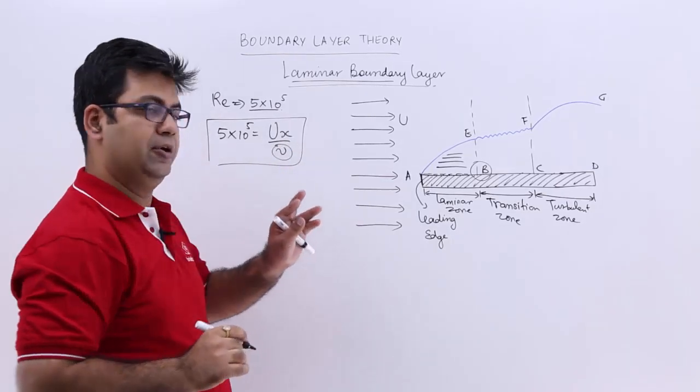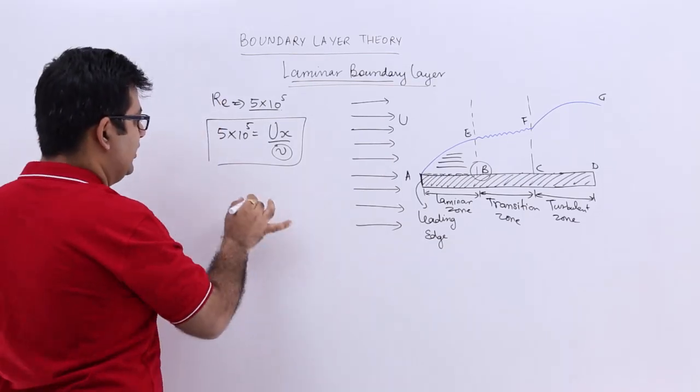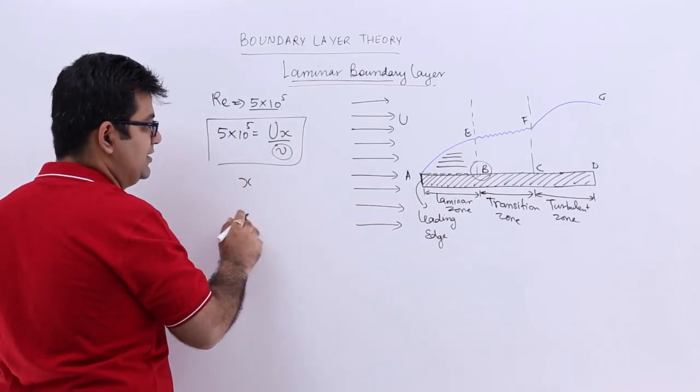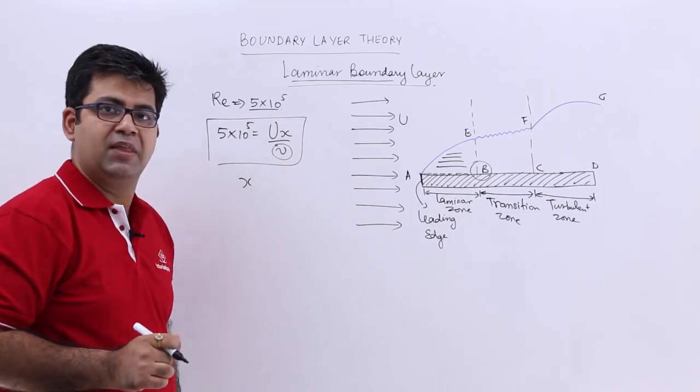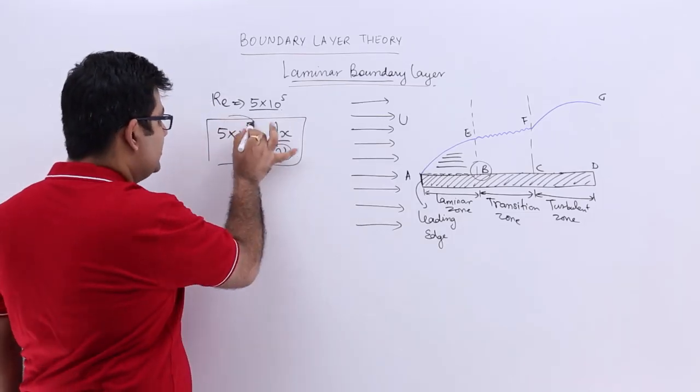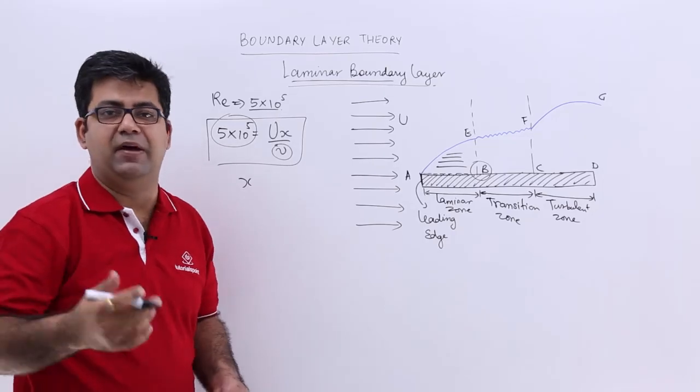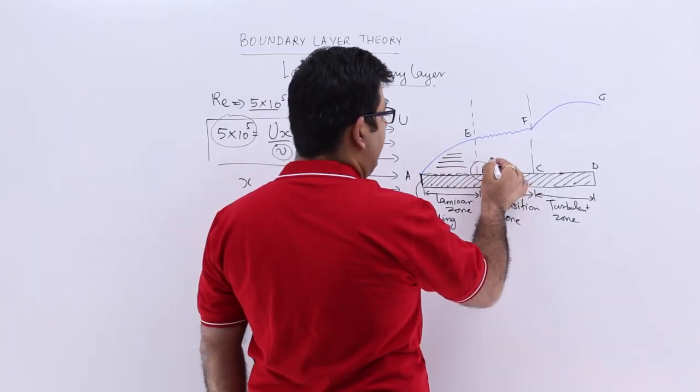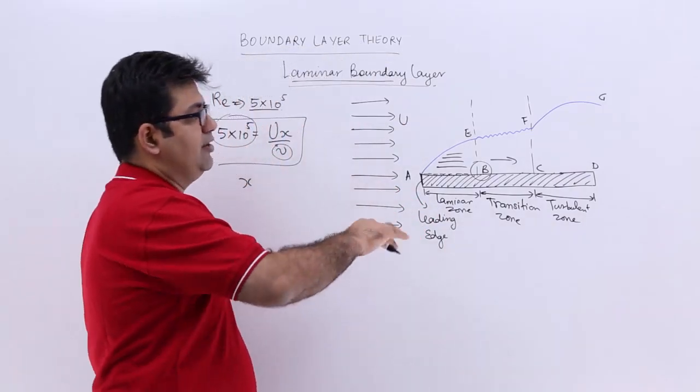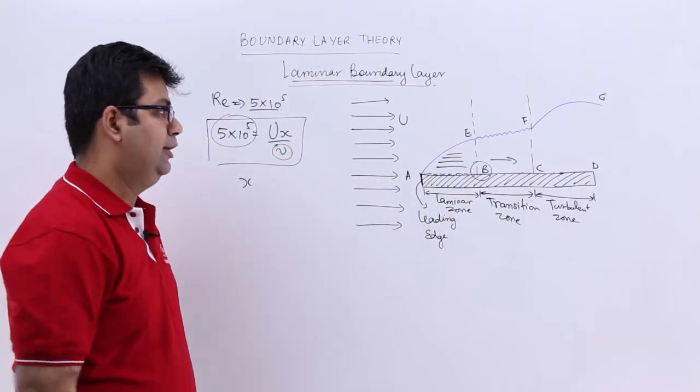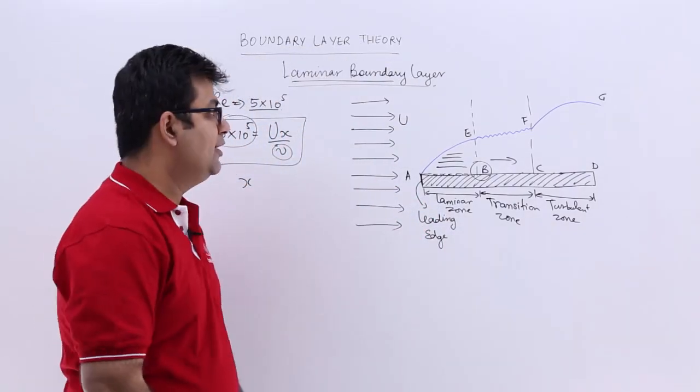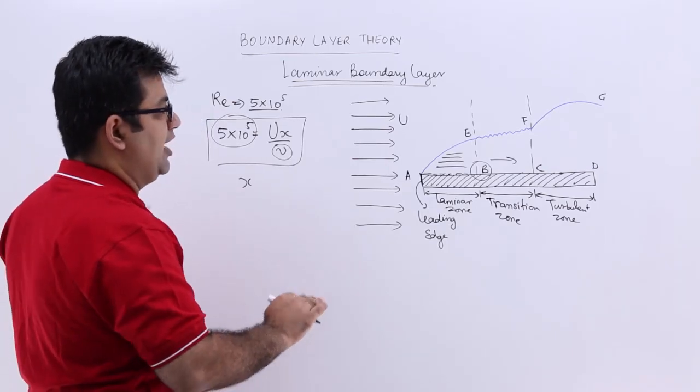If your x is at such a distance that the Reynolds number goes up by 5 into 10 to the power 5, then you would enter into the transition zone and finally into the turbulent zone.